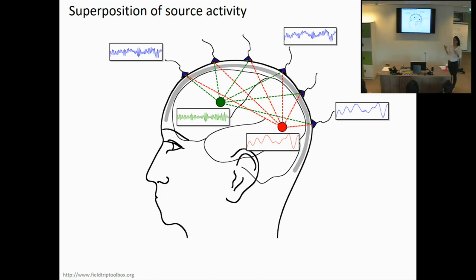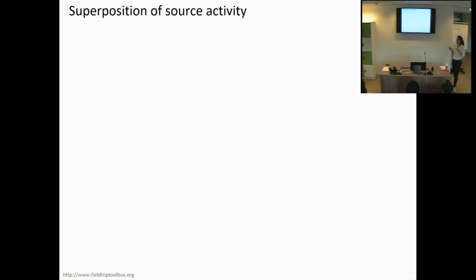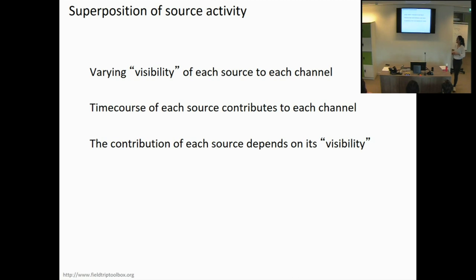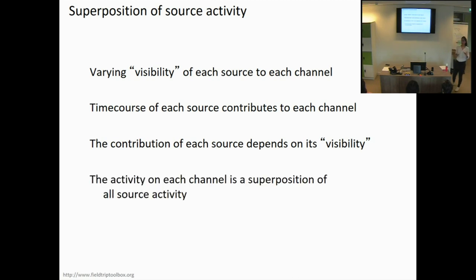What we observe on the channel level is really a superposition of the underlying source activity. When we do source localization, it's not only about recovering the position of the sources, but also about reconstructing these time courses. Each source has a different visibility with respect to each channel, and each time course contributes to all the channels. In the end, what we have is a linear combination of the source activity, and that's important because we're going to base our source modeling on that linear combination as well.